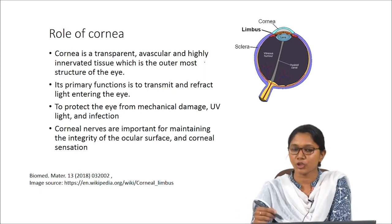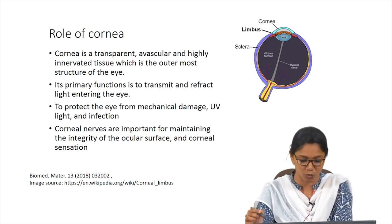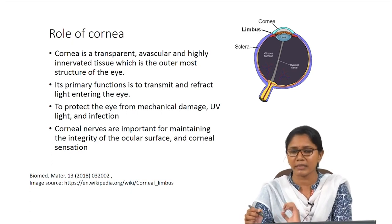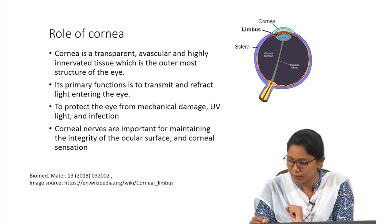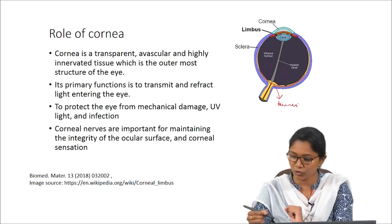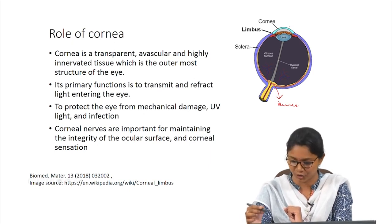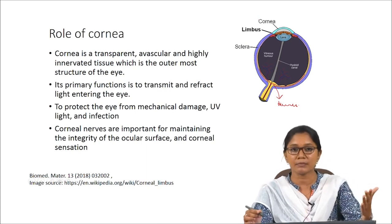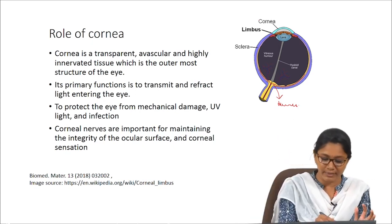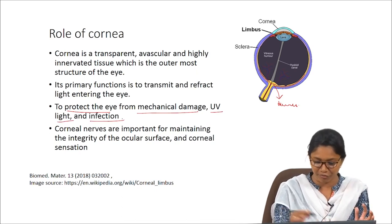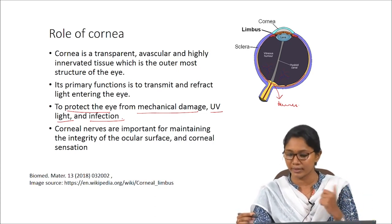The cornea is the outer transparent region and is a major refractive zone. Since it is avascular but innervated, millions of nerves go through the cornea from the optic nerve — entering through the limbus into the lower regions of the cornea and going up to the epithelial region. The primary function of the cornea is to transmit and refract light, and it also protects the eye from mechanical damage, UV light, and infection. The corneal nerves are very important for maintaining the integrity of the ocular surface and corneal sensation.